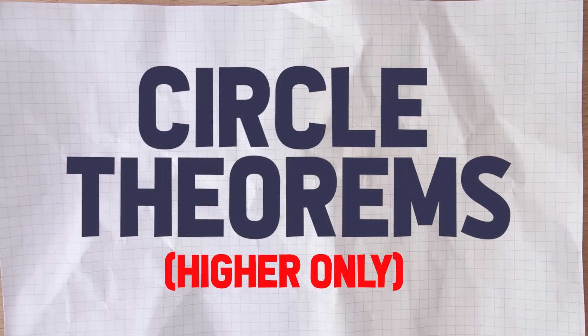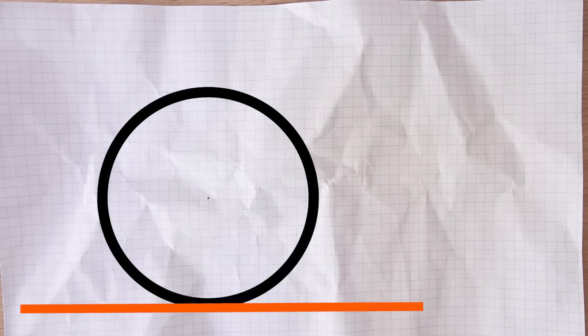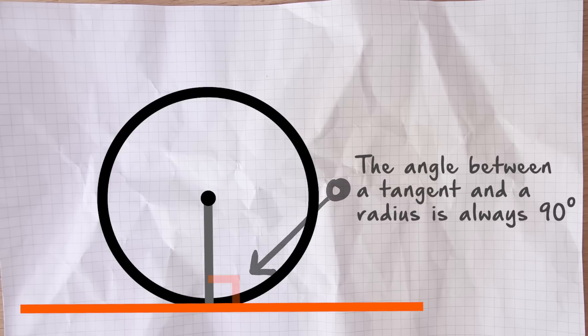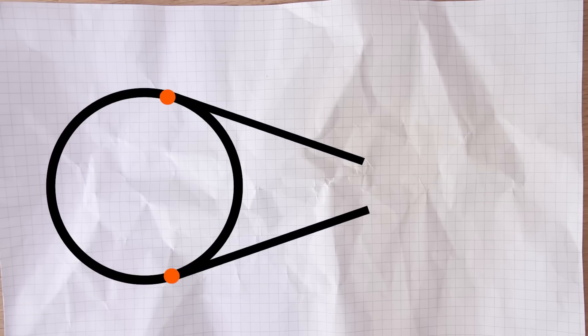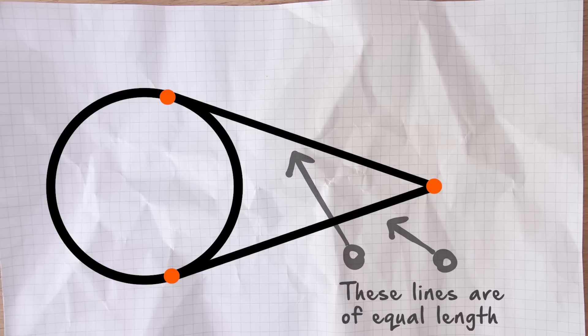The first topic is Circle Theorems. I'm not going to go into great detail here - I've done a quick four-minute video outlining all of the theorems and everything you need to know, plus a longer video with more detailed explanations and example questions. The key thing I would say is that questions often relate to tangents: you need to know that the radius meets a tangent at a right angle, and that two tangents meeting at a point will be of equal length. Those come up quite a lot, but it's worth knowing all of the Circle Theorems.